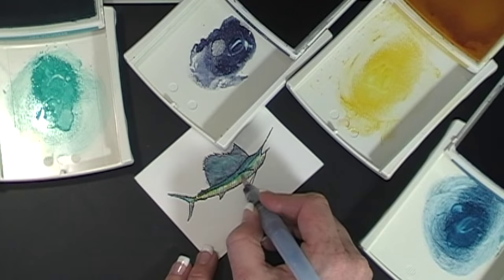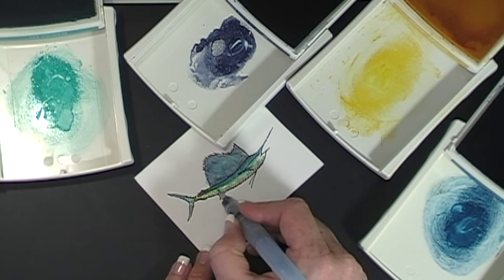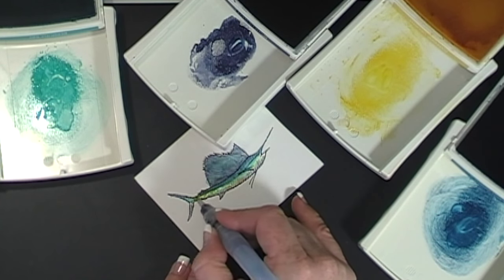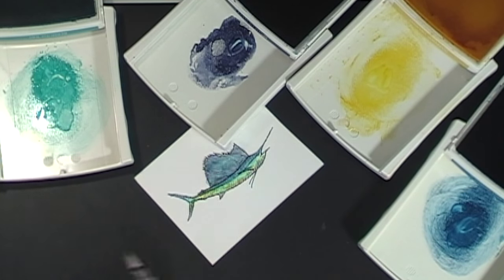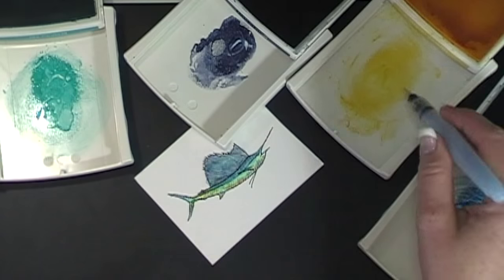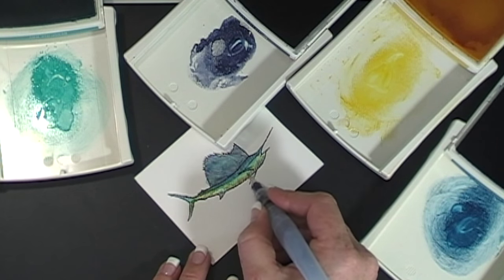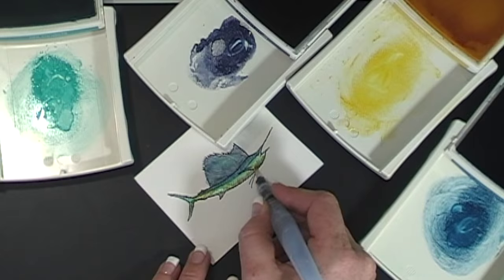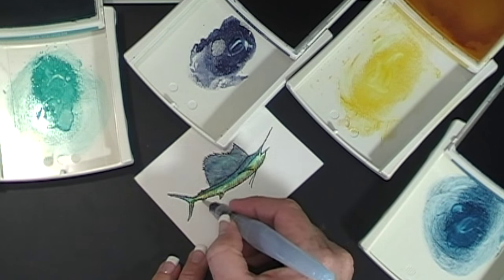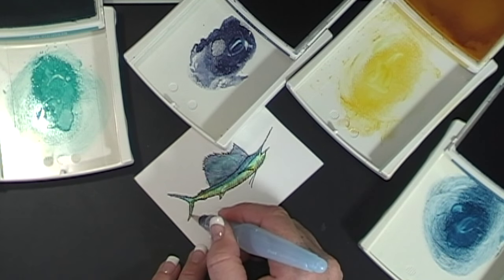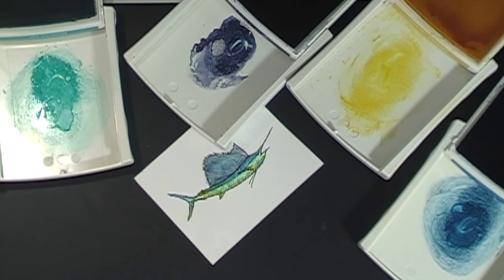I actually want to bring some of the Bermuda Bay color down into the yellow to create a little bit of a green. And then as I go further down, I want that green to lighten, and I really want more yellow across the bottom of my fish. Now this is not an exact depiction of a marlin, but it's as close as I could get, and I think it looks really beautiful.